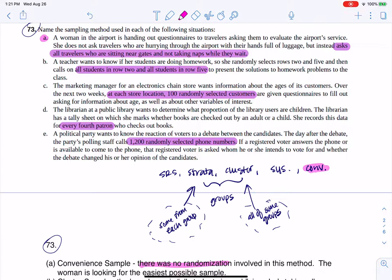All right. The next one, we have this teacher who wants to know if her students are doing homework. So you can see that she groups them. So she's got these groups, right? And by groups, I mean she's breaking them into rows. And she picks out of, I don't know how many rows there are, but rows two and five. And you see this key phrase here that she took all of the group, all of the students in some of the groups, right? So all of the students in some of the rows. So that one's going to be clustering.